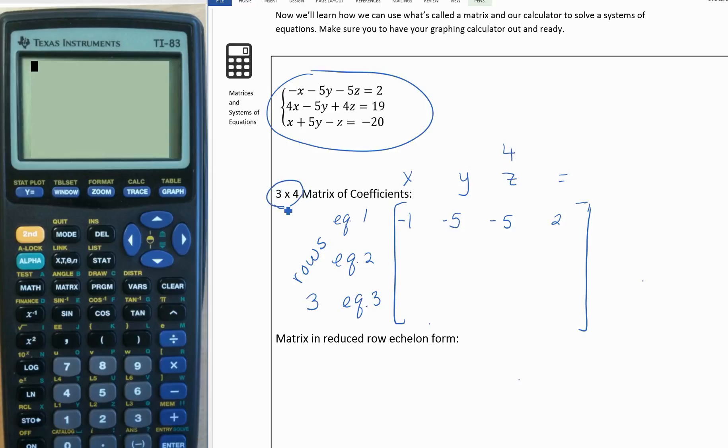If you had more equations and more unknowns, you could expand this. Let's look at the second equation here: we have 4x minus 5y plus 4z equals 19.